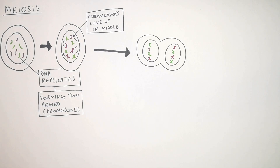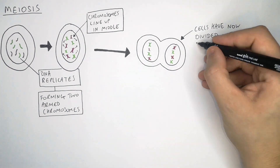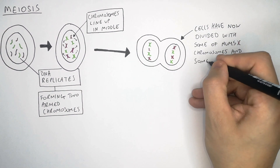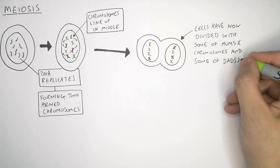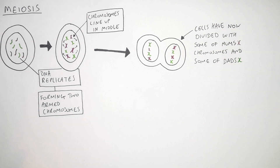Half of the two-armed chromosomes are going to form one cell and the other half are going to form the other cell. So the cells have now divided — some with mum's chromosomes in them and some with dad's chromosomes in them. The cells have divided from one cell with one-armed chromosomes to two cells with two-armed chromosomes.